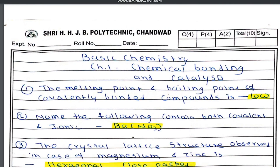Welcome students, this is part fifth of important MCQs of basic science chemistry, chapter first: chemical bonding and catalysis. The first question is: the melting point and boiling point of covalently bonded compounds is low.